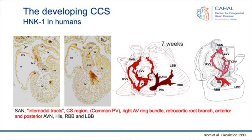This is my own work from 1999, where we delineated the cardiac conduction system with the HNK1 marker. Here you see these nice reconstructions, which took me hours to make, where you can see not only the sinoatrial node, the AV node, and the His bundle and bundle branches, but also the right AV ring bundle around the tricuspid valve, the retroaortic ring bundle, and interestingly, three tracks between the sinus node and the AV node, an area around the coronary sinus, and even around the pulmonary vein.